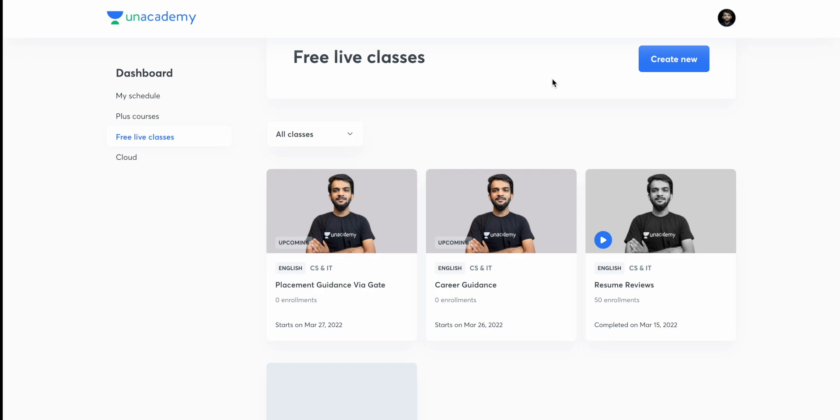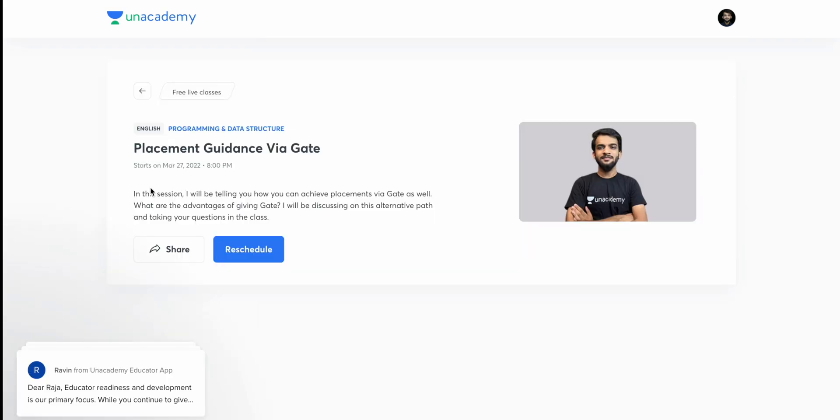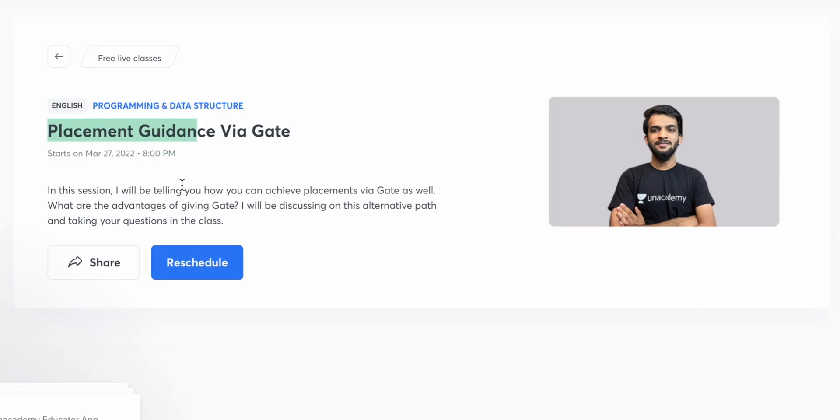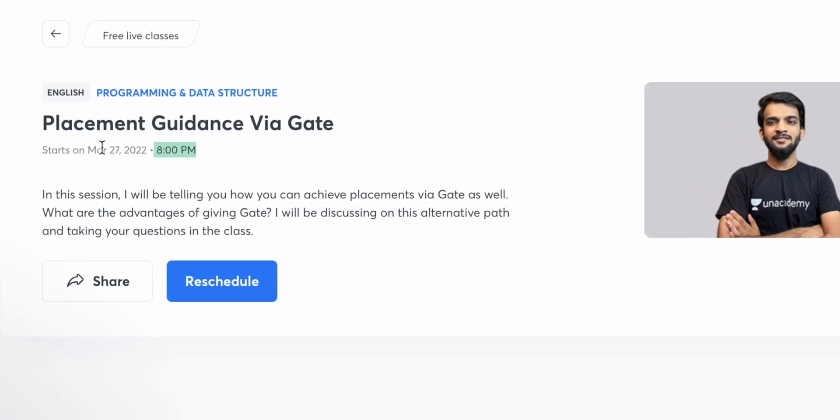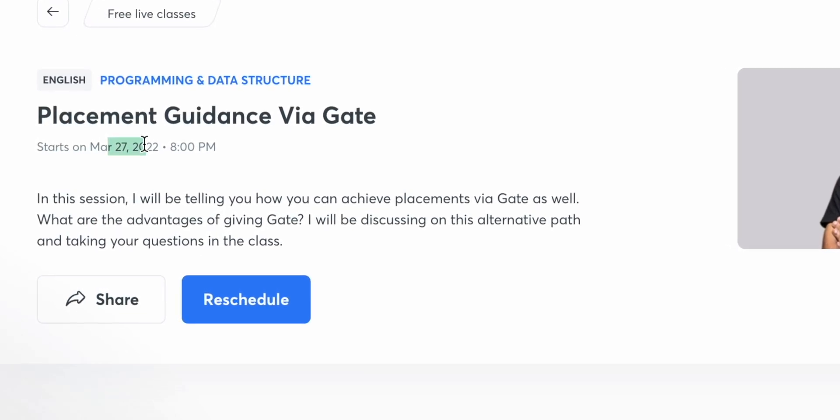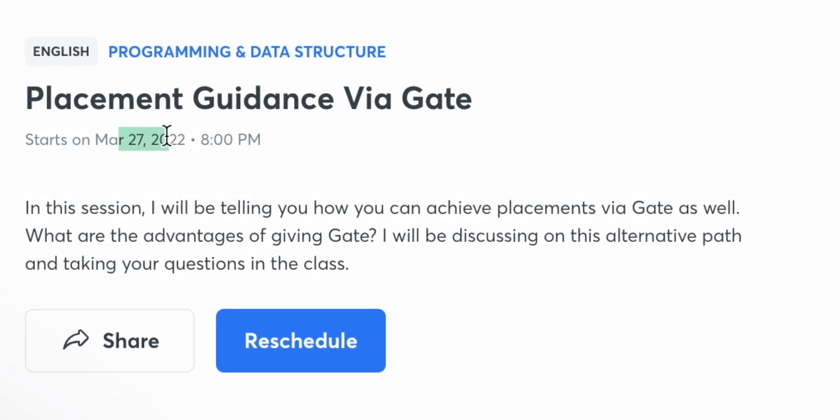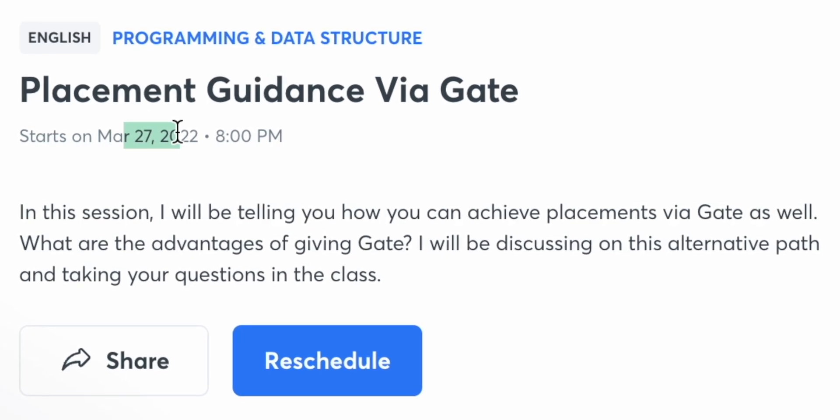So as you know, I've been taking some free sessions on an academy. Before starting off the video, I'd love to tell you about the next couple of sessions I'll be taking on the upcoming Saturday and Sunday. On Sunday, I'll be taking another session where I'll be discussing how you can get a placement via GATE. In the session, I'll be talking about the plethora of opportunities you'll be getting via GATE. Book your calendar at 8 p.m., 27th March. You can interact with me one-on-one. The link is in the description, so make sure you join at 8 p.m.